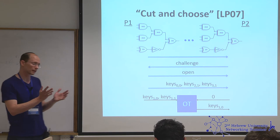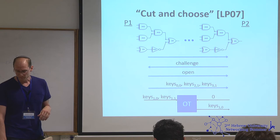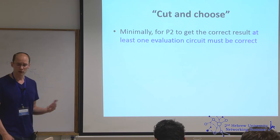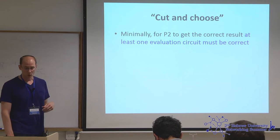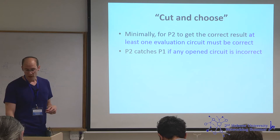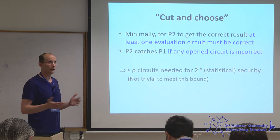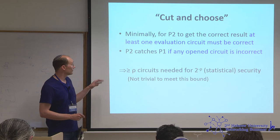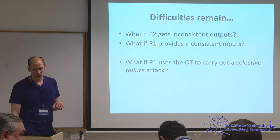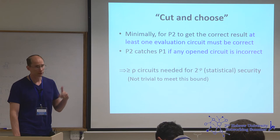P2 challenges P1 to prove that, say, half of them were constructed correctly. P1 opens half and shows they were computed correctly, then you go ahead and evaluate the remaining half. If you send ρ circuits you get 2^{-ρ} security, so maybe ρ equals 80 or 60, whatever you're comfortable with. For P2 to get the correct result, at least one evaluation circuit must be correct; on the other hand P2 catches P1 cheating if any of the challenged circuits is incorrect. It's similar to zero-knowledge proofs — cut-and-choose was actually used previously in that context.